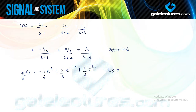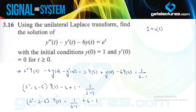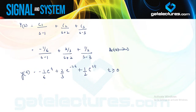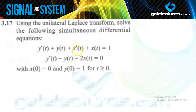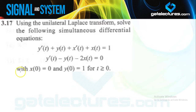So this is the inverse Laplace transform for the given equation. We were given a differential equation and the solution is y(t) equal to that signal. Now look at the next question: they have given two simultaneous differential equations and are asking you to find the solution using unilateral Laplace transforms. Finding solutions of two equations means finding y(t) as well as x(t) — two equations in two variables.